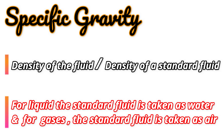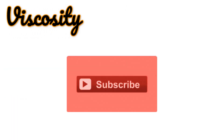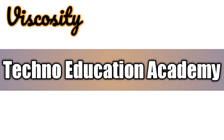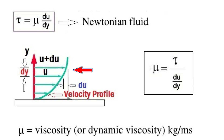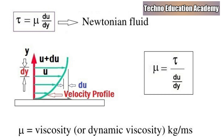The next property is viscosity. Viscosity is defined as the property of a fluid which offers resistance to the movement of one layer of fluid over another adjacent layer. When two layers of fluid move at a distance dy apart, one over the other at different velocities u and u+du, the viscosity together with relative velocity causes a shear stress acting between the fluid layers. The top layer causes shear stress on the adjacent lower layer and vice versa. This shear stress is proportional to the rate of change of velocity with respect to y, denoted by tau.